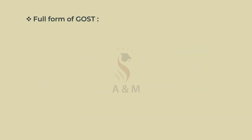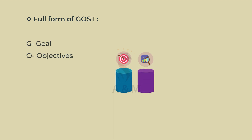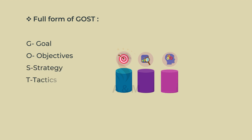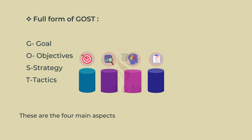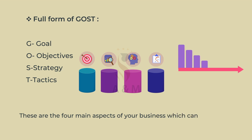Now let us know the full form of GOST. G stands for Goal, O stands for Objectives, S stands for Strategy, and T stands for Tactics. These are the 4 main aspects of your business which can lead or lag you behind.